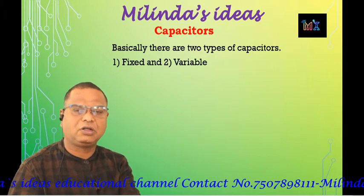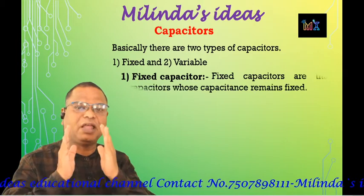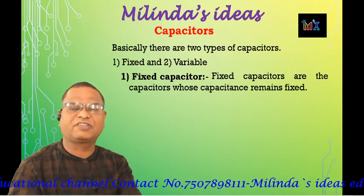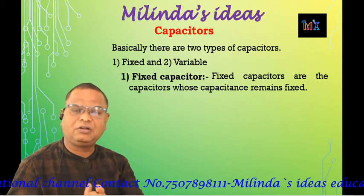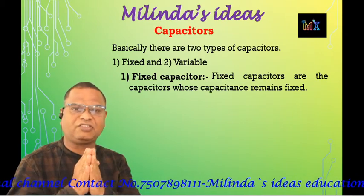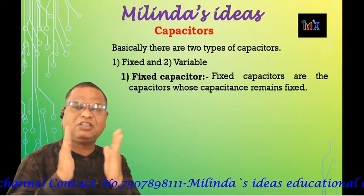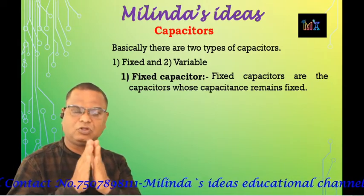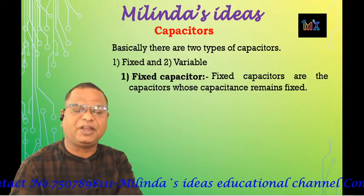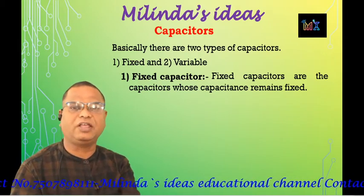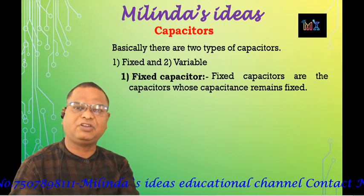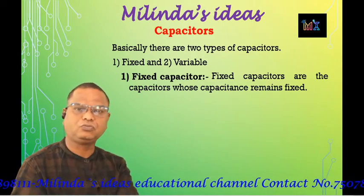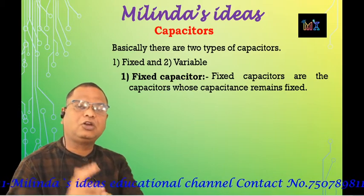A fixed capacitor is one in which the capacitance — the ability to store electric charge — remains fixed and does not change. A variable capacitor is one in which the capacitance can be varied by changing the distance between the two plates or by varying the area. In a variable capacitor we mostly change the distance between the plates to change the capacitance value.